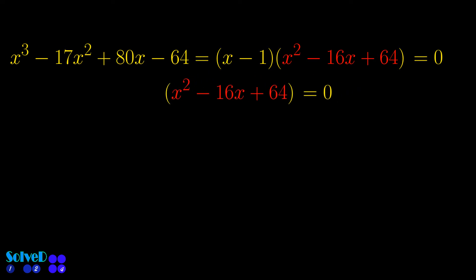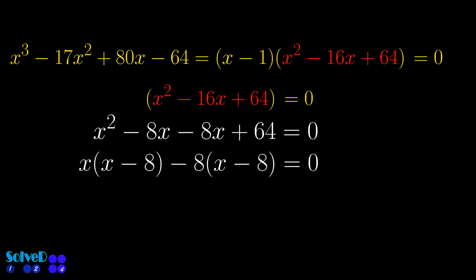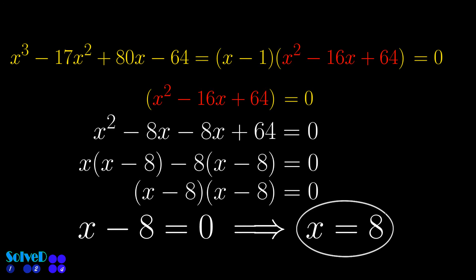Now that we have found the other factor, we can set this equals 0 in order to find other values of x. This can be achieved by finding factors of this function, as you can see in this example. And here is the new value of x, for which the given function is 0.